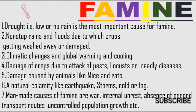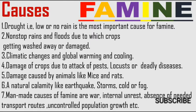Why does famine occur? Drought — that is, low or no rain — is the most important cause. Second, non-stop or torrential rain and floods cause crops to get washed away or damaged. Climatic changes such as global warming or global cooling are another reason. Damage of crops due to attack of pests, insects, locusts, or deadly diseases, and damage caused by animals like mice and rats are further reasons. Natural calamities like earthquakes, storms, cold, and fog are also causes.